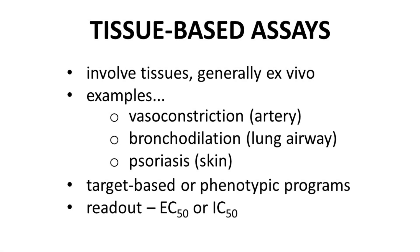Tissue-based assays observe the action of a molecule on a tissue. The tissue is generally taken from a living organism, in which case the assay may be called an ex vivo study. Examples include an assay for vasoconstriction likely performed on arterial tissue, bronchodilation using lung airway tissue, or psoriasis using a skin sample. Tissue-based assays are appropriate for target-based or phenotypic programs, and the readout may be in the form of EC50 or IC50.